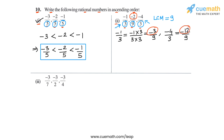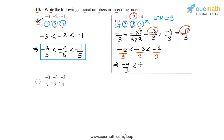Arranging these numerators in ascending order, we get minus 12 less than minus 3 less than minus 2. Dividing all of them by 9, we get minus 12 by 9 less than minus 3 by 9 less than minus 2 by 9. In original form, minus 12 by 9 was minus 4 by 3, minus 3 by 9 was minus 1 by 3, and then we have minus 2 by 9. This is the three numbers in part 2 arranged in ascending order.